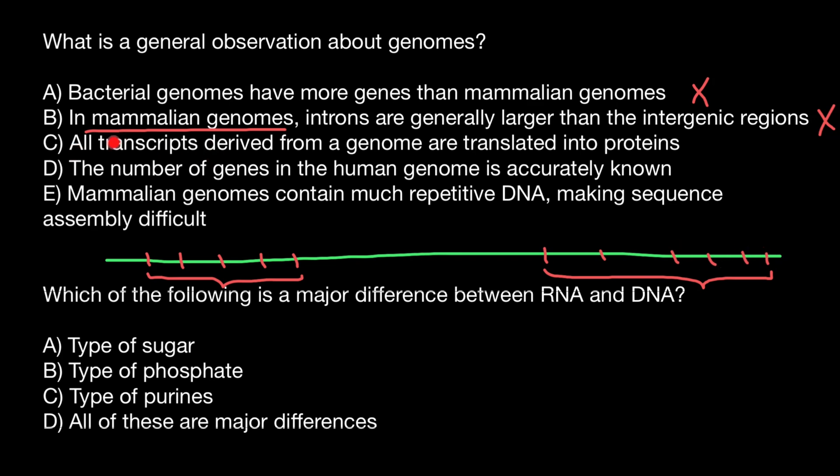The next statement: all transcripts derived from a genome are translated into proteins. Actually, not all genes that are transcribed would be translated. For example, tRNA just consists of RNA and is never translated into protein. Also, the large and small subunits of the ribosome consist of about 50% protein and 50% RNA, and that RNA is also never translated into protein. So this is also a wrong statement.